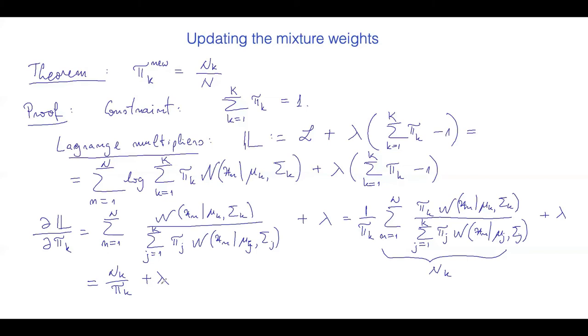On the other hand, if I take the partial derivative of this special L with respect to λ, this is quite easy because the log-likelihood term, when I take the partial derivative with respect to λ, goes to 0. So I'm only left with the sum from k=1 to K of π_k minus 1.